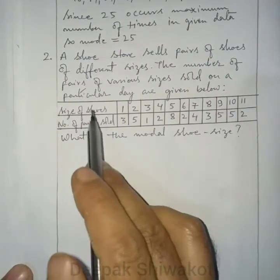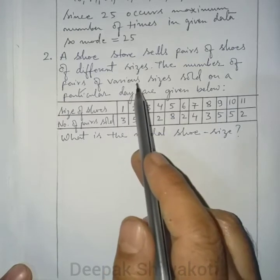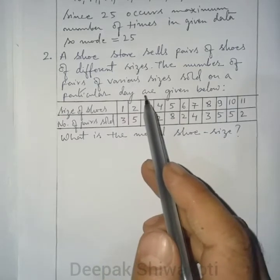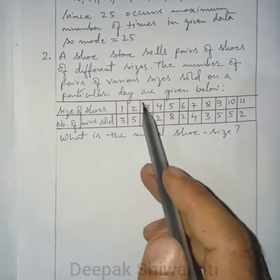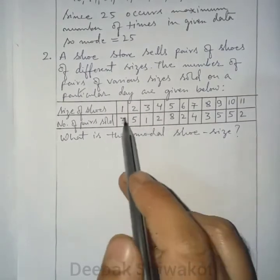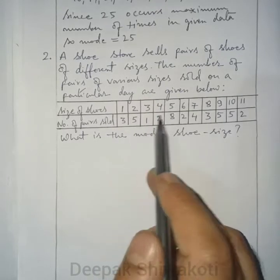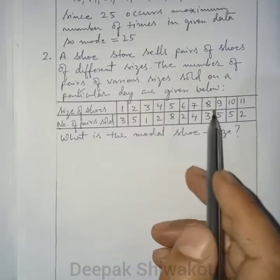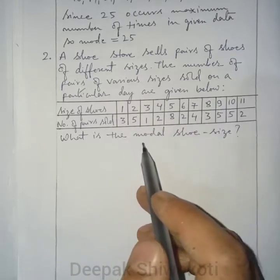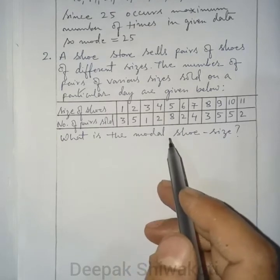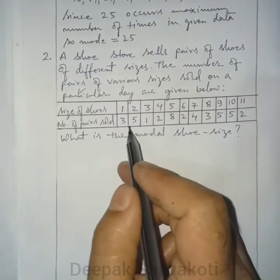Question number 2: A shoe store sells pairs of shoes of different sizes. The number of pairs of various sizes sold on a particular day are given in a frequency distribution table, showing shoe size and number of pairs sold. We have to find the modal shoe size.